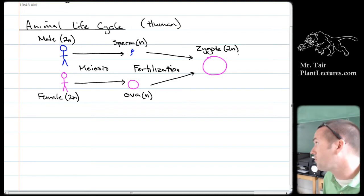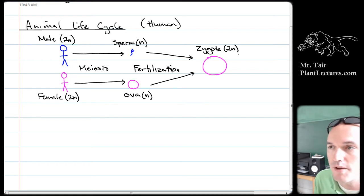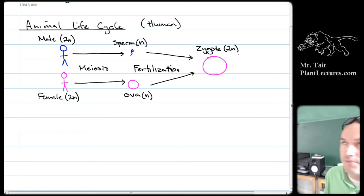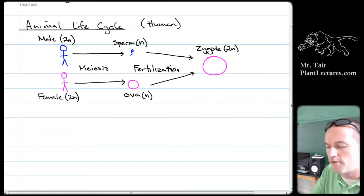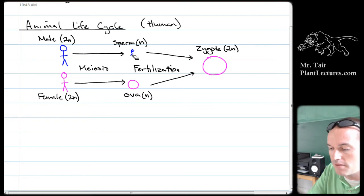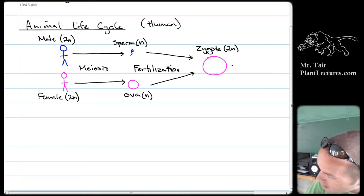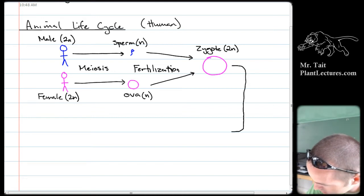That zygote can be either male or female based on the chromosomes inherited from the sperm. The sperm determines whether an offspring is male or female. Females have two X chromosomes, so the only option in the ova is an X chromosome. But the male is XY, so he can pass on either X — making the offspring XX (female) — or Y, making the offspring XY (male).